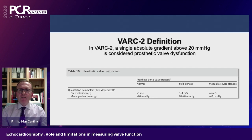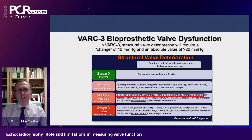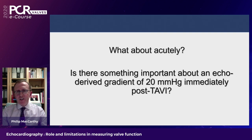The VARC2 definition states quite clearly that a single absolute mean gradient above 20 mmHg is considered prosthetic valve dysfunction — mild prosthetic valve dysfunction, mild stenosis. And if we look at the VARC3 definition of bioprosthetic valve dysfunction, an increase in mean gradient of greater than 10 mmHg or a final gradient greater than 20 classifies as moderate hemodynamic structural valve deterioration. So it would certainly seem from these definitions that we need to be really concerned about gradient.